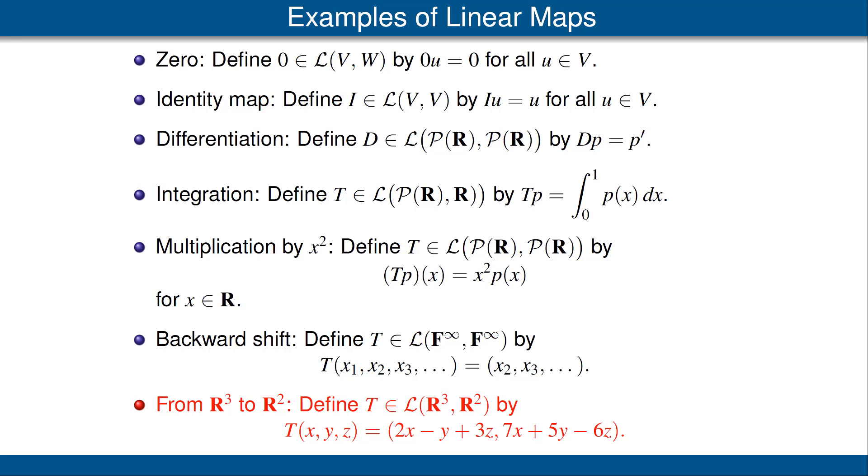Our next example is a linear map from R^3 to R^2. It's defined by T(x,y,z) is first coordinate 2x minus y plus 3z, second coordinate 7x plus 5y minus 6z. Obviously there's nothing special about the numbers that appear in this example. They could be replaced by any numbers. Or we could go from R^n to R^m for any integers m and n with similar examples.